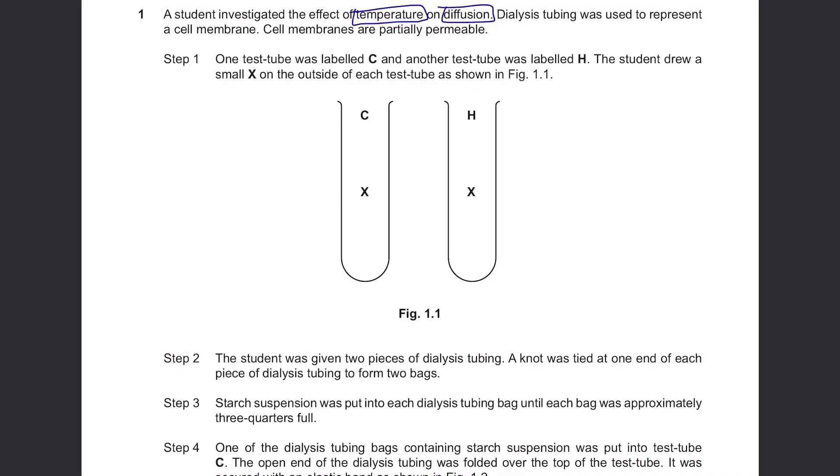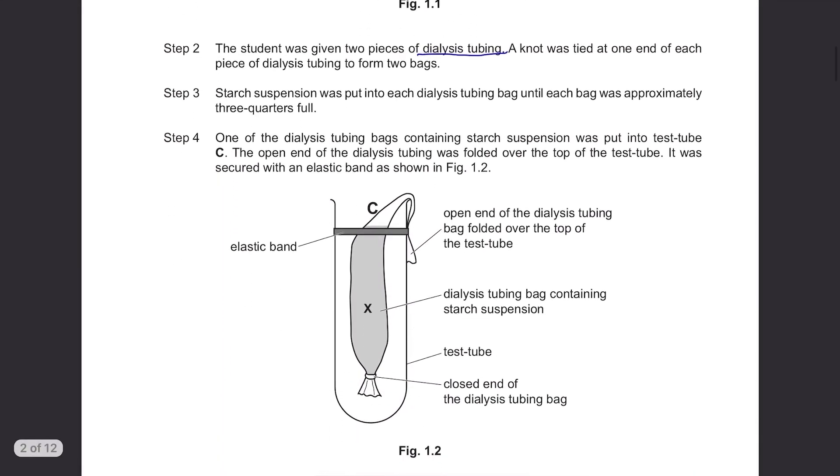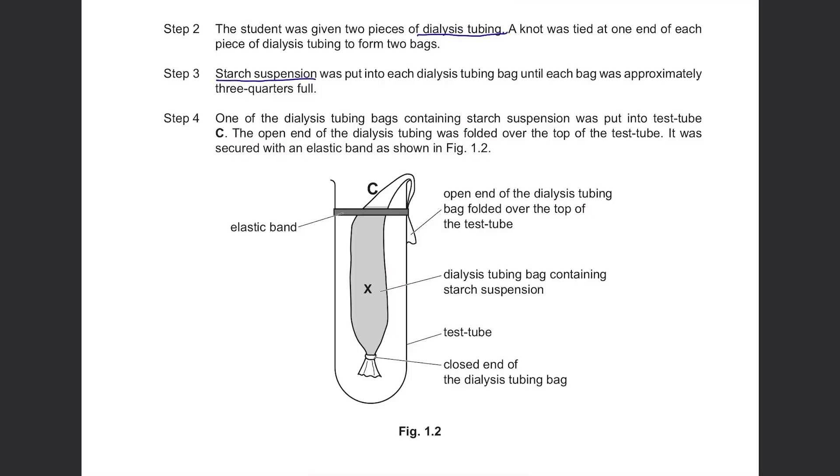Step 1: One test tube was labelled C and another test tube was labelled H. The student drew a small X on the outside of each test tube as shown in Figure 1.1. Step 2: The student was given two pieces of dialysis tubing. A knot was tied at one end of each piece of dialysis tubing to form two bags.